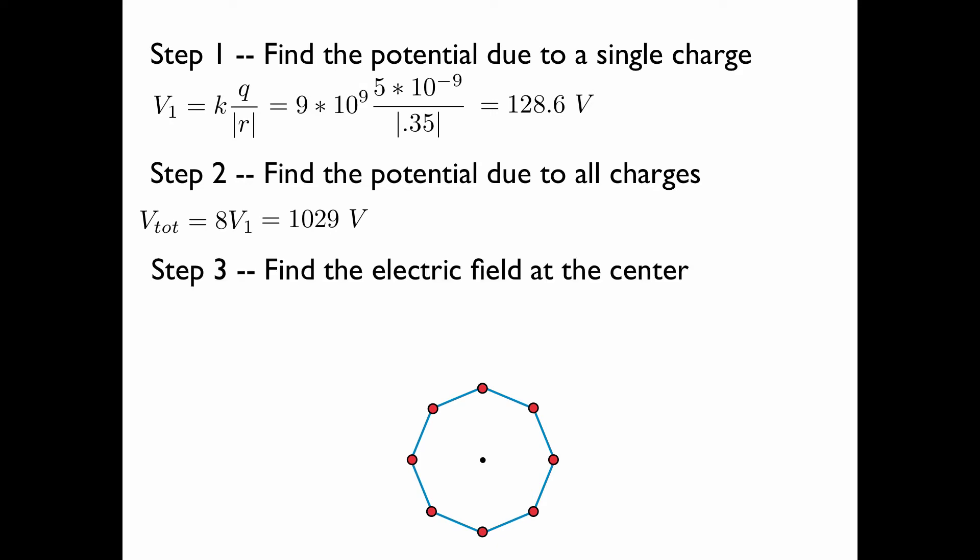Now we'll find the electric field at the center. Consider the diagram below. The convention for field lines is to draw a field line with an arrow pointing away from a positive charge. So each one of these charges has an electric field pointing towards the center of the octagon. Each one of these charges has an electric field with the same magnitude at the center of the octagon, because they have the same charge and they're at the same distance. However, they're pointing in opposite directions at the center of the octagon.